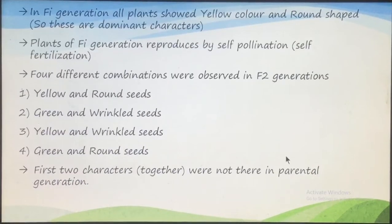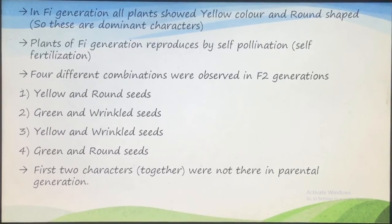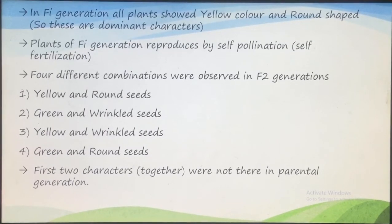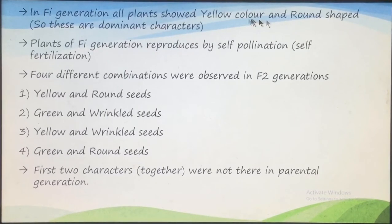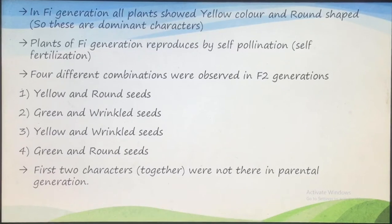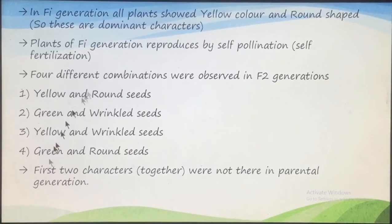The parental generation must be homozygous for the two traits, meaning it should be a pure line trait. When Mendel crossed two plants, in the F1 generation all the plants showed only one character — yellow color seeds and round shape. This means yellow color of the seed and round shape of the seeds are the dominant characters, because in F1 generation only the dominant trait appears.